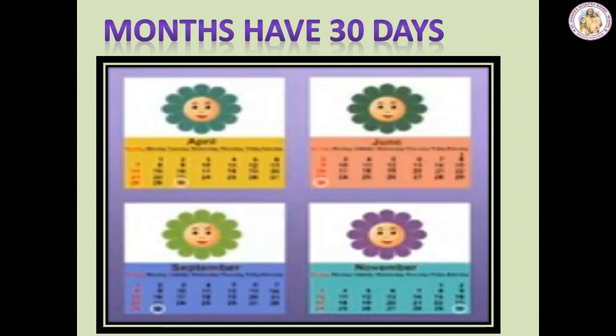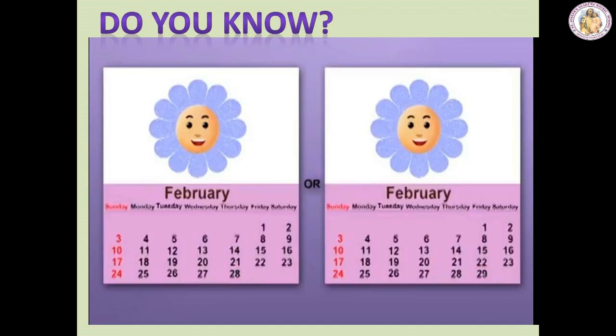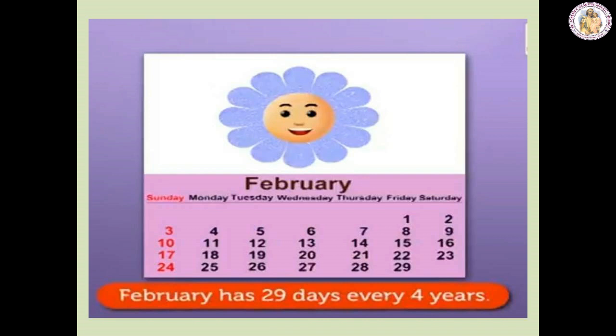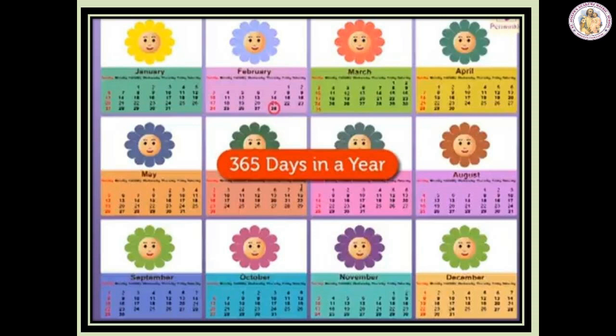The months April, June, September and November have 30 days. The month February has either 28 or 29 days. February has 29 days every 4 years. There are 365 days in a year. In a leap year, there are 366 days because February has 29 days in that year. This is called a leap year.